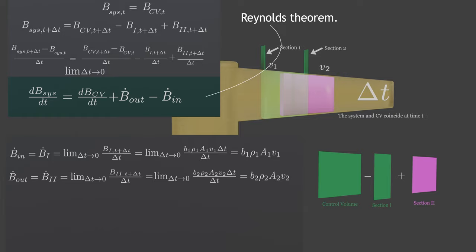Hey, look at it, the time rate of change of the property B of the system is equal to the time rate of change of B of the control volume, plus the net flux of B out of the control volume by mass crossing the control surface. This is the desired relation, since it relates the change of a property of a system to the change of that property for a control volume.